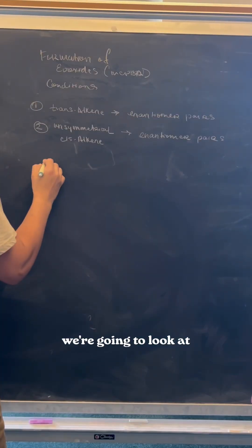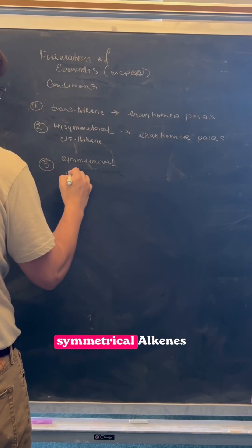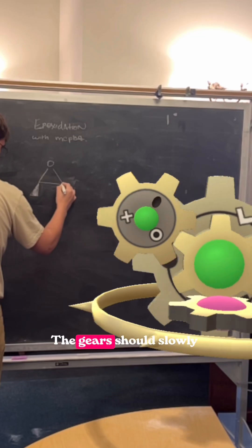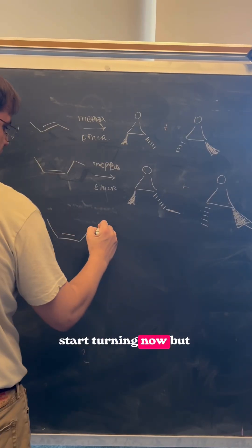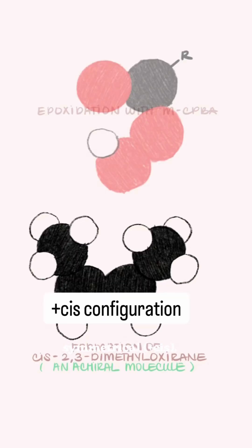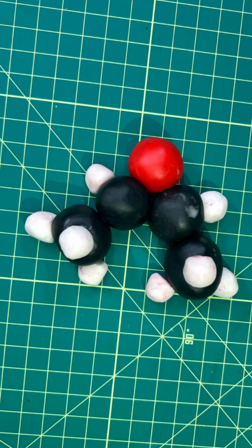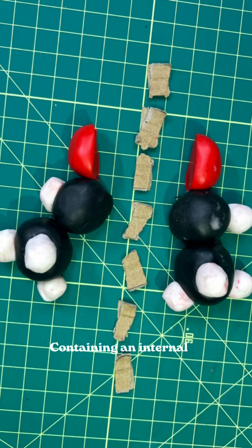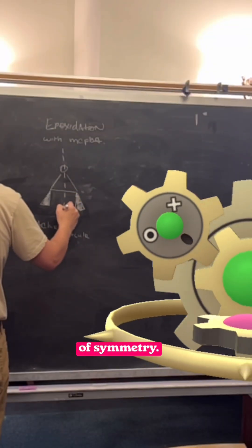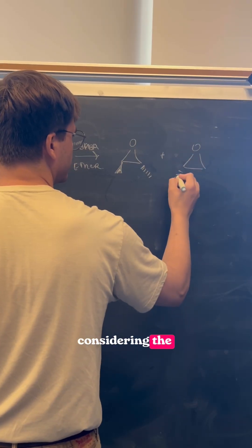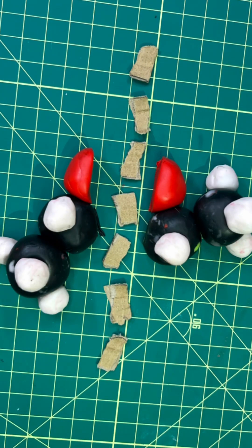The last example we're going to look at is the reaction of symmetrical alkenes. The gears should slowly start turning now, but since the alkene is symmetrical, the resulting epoxide product is also symmetrical, containing an internal mirror plane of symmetry, a factor we didn't have when considering the previous two conditions.